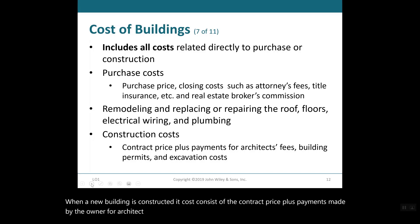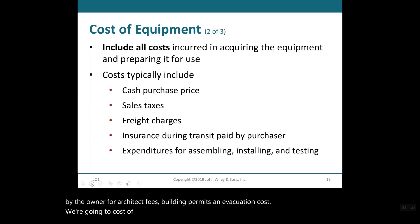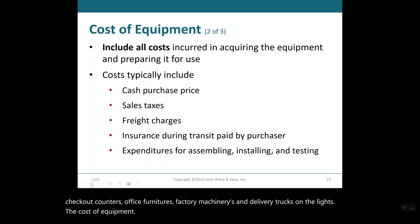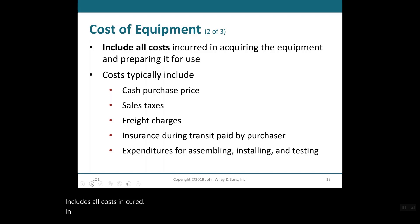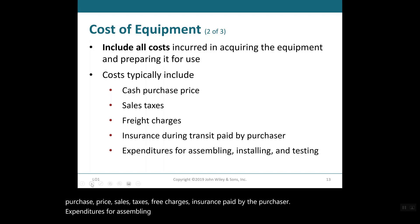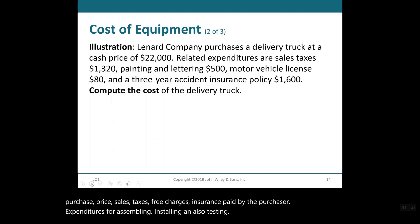Cost of equipment: Equipment includes assets used in operations such as store checkout counters, office furniture, factory machinery, and delivery trucks. The cost of equipment includes all costs incurred in acquiring the equipment and preparing it for use. These costs typically include the cash purchase price, sales taxes, freight charges, insurance paid by the purchaser during transit, and expenditures for assembling, installing, and testing.